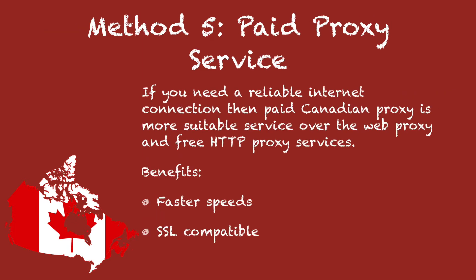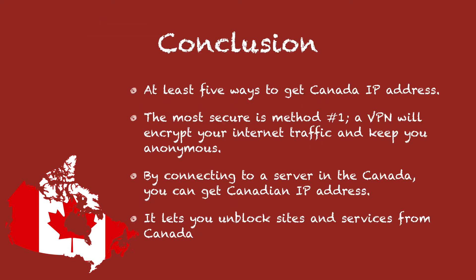Method 5: Paid proxy services offer faster speeds and more reliable connections. There are at least 5 ways to get a Canadian IP address. However, the most reliable, secure and efficient is a virtual private network. To find out which are the best VPN services, find a link in the description.